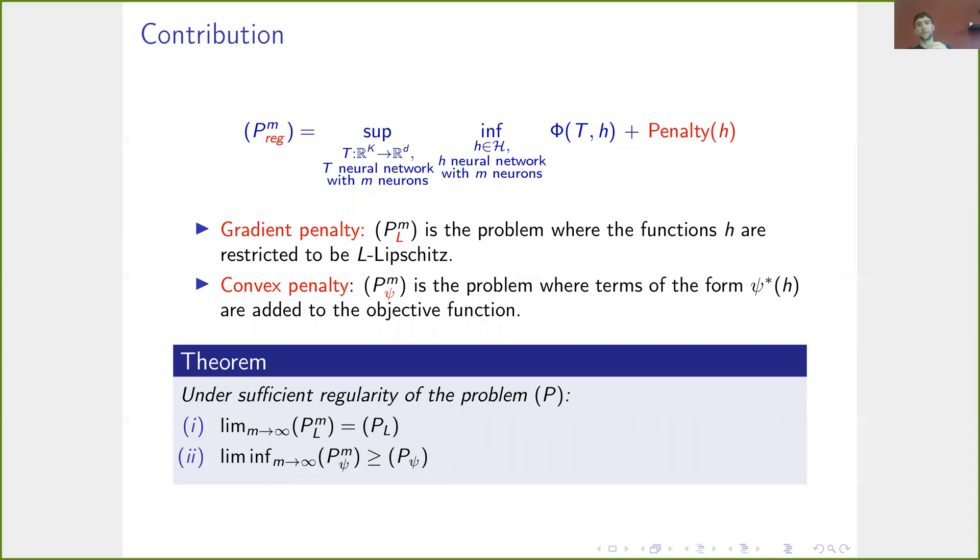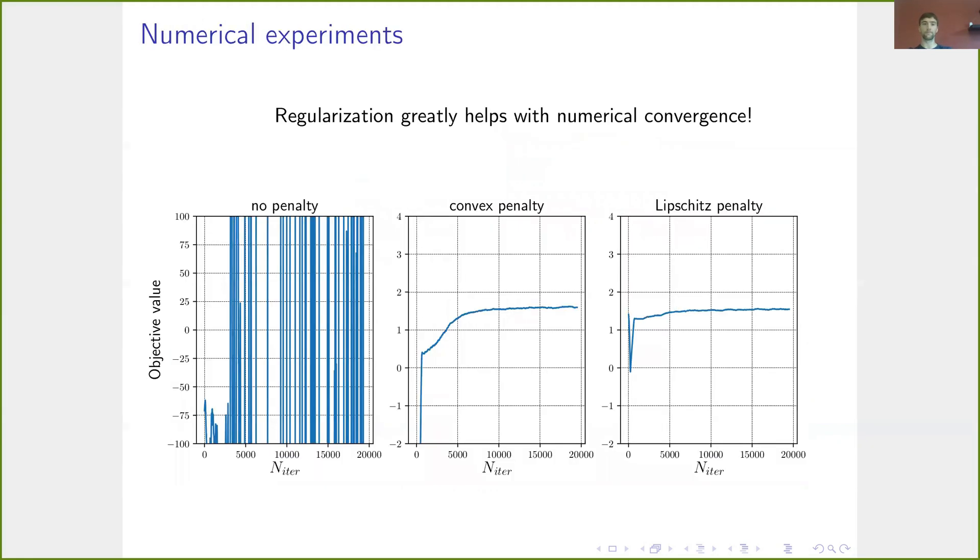Concretely, this leads to two problems: with the gradient penalty, it leads to the problem P^ML, where the functions h are restricted to Lipschitz, and the problem P^M_ψ with this convex penalty. And our main theoretical result is that under sufficient regularity of the problem P, here really this neural network approximation no longer has the problem that it almost always evaluates to minus infinity. In many cases even, for example, here in case i, we find that for large enough networks, the approximation error is even zero.